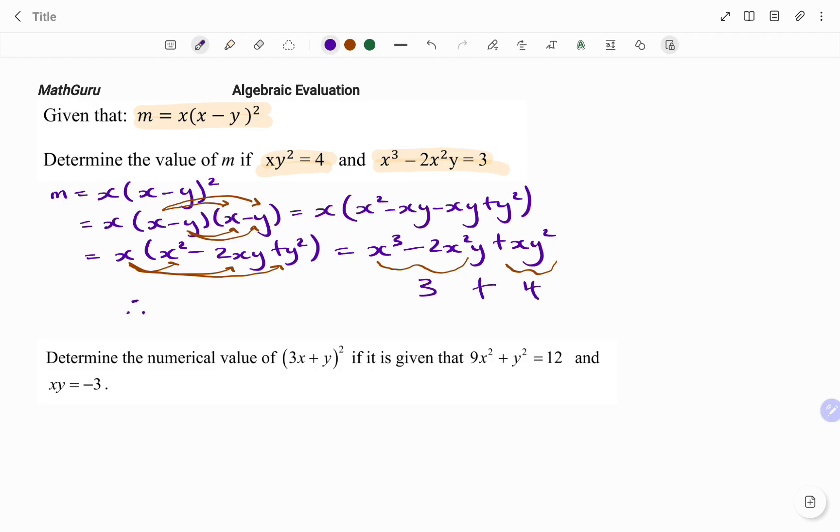So what that means is, therefore, my m equals 3 plus 4, which is equal to 7. Let's look at the second example.